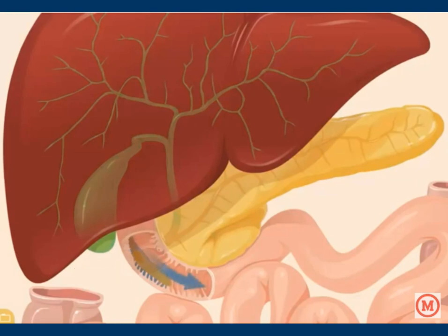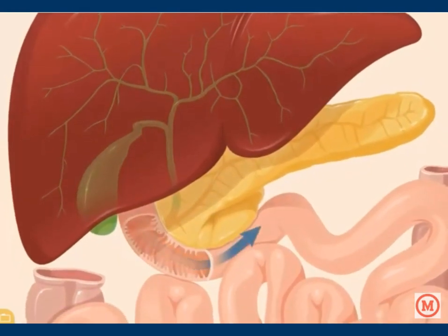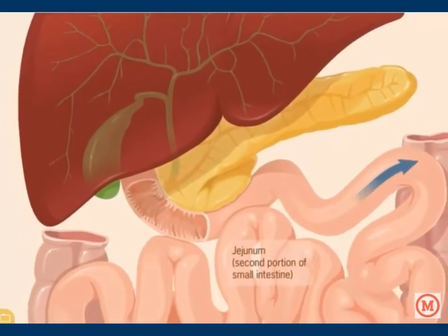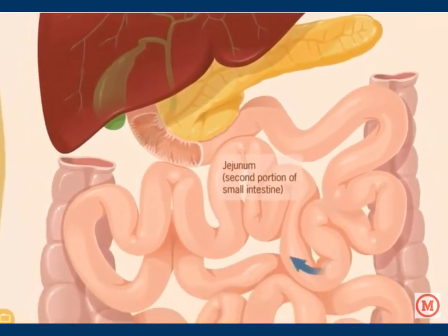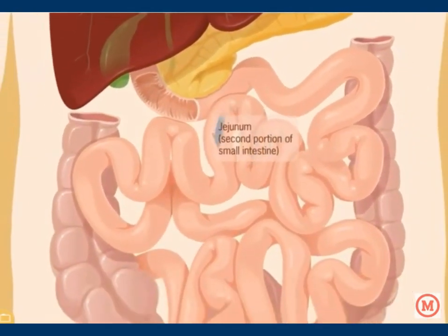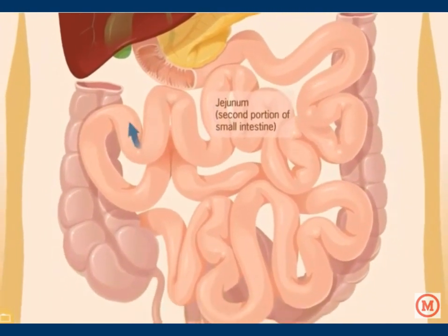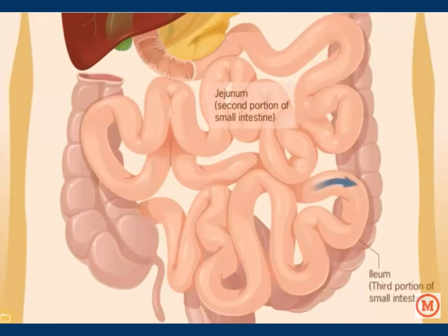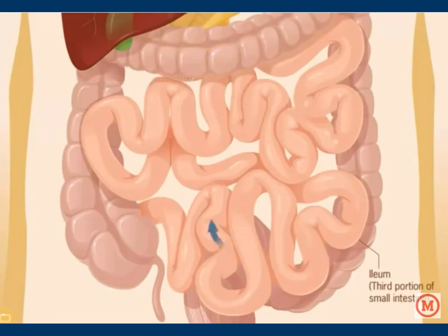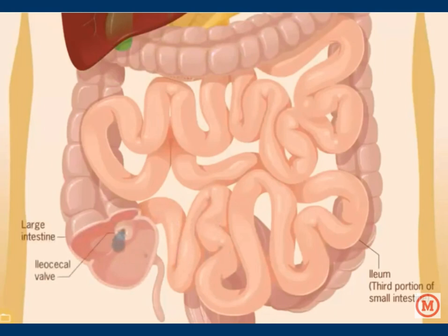The chyme continues to mix with digestive enzymes as it moves through the duodenum and into the jejunum, the second portion of the small intestine. Nutrients from the digested food are absorbed into the bloodstream in the jejunum. The bolus then reaches the ileum, where there is more nutrient absorption.